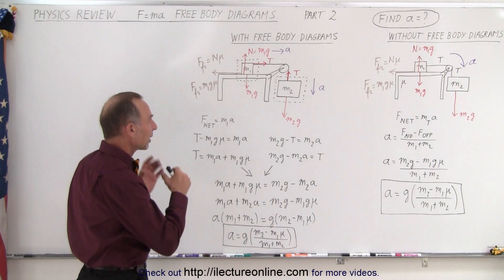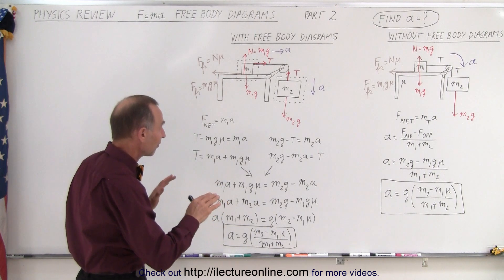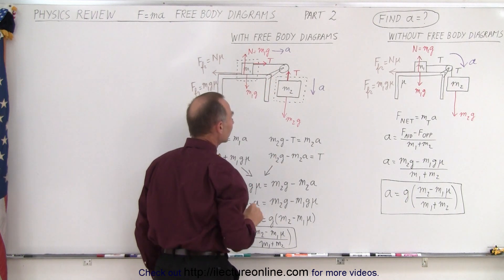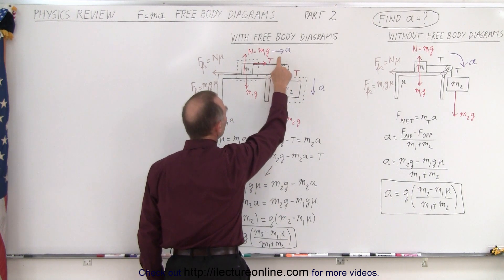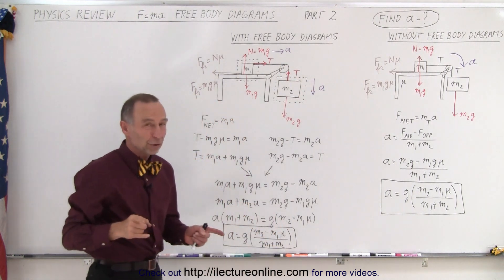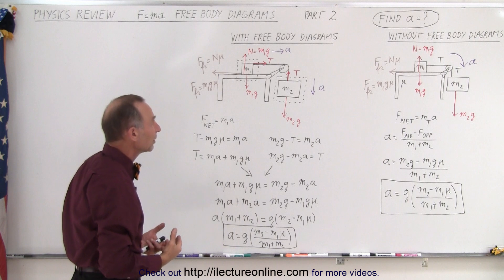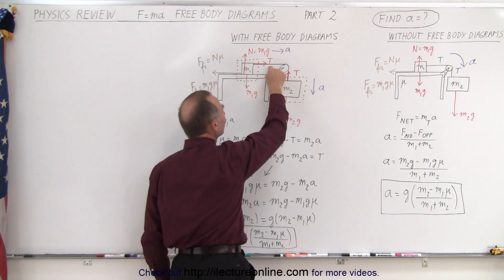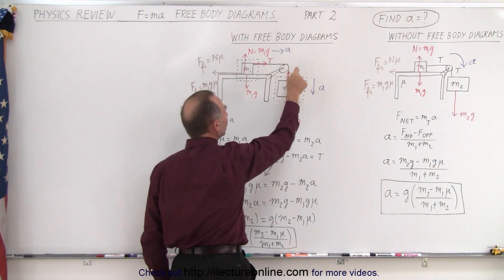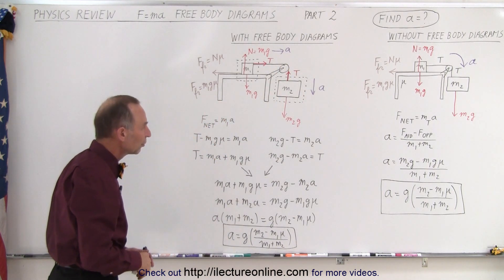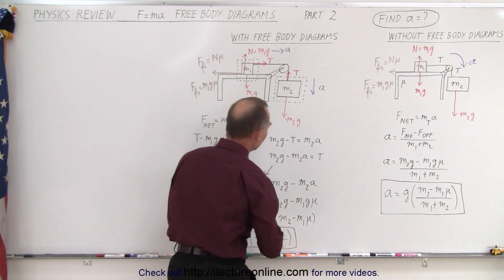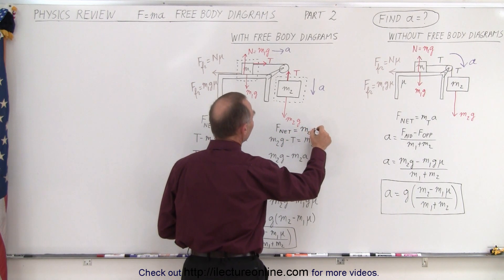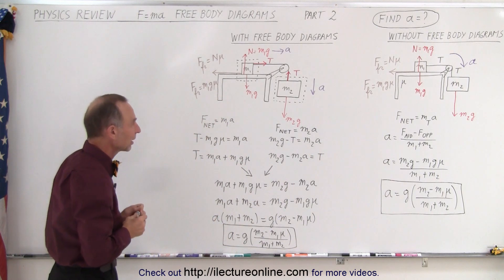We'll get the same answer using free body diagrams, although it's a little bit more work, but it's a safe fail method. What you're doing is looking at each mass in the system and all the forces acting on each of the two masses. You also associate acceleration with each of the two free body diagrams, and even though they point in different directions, the magnitude will be the same. We also realize that the magnitude of the tensions will be the same on both sides of the pulley. We use the equation F net equals mass times acceleration for each free body diagram separately.